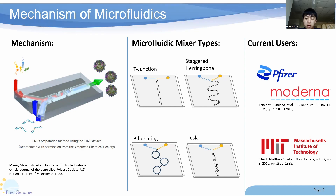To highlight the key parameters for microfluidic mixing: total flow rate, flow rate ratio, and pump type all have a significant effect on the end product of LNP synthesis. Total flow rate determines the overall speed and efficiency of the mixing process. Flow rate ratio affects the degree of mixing and the final composition of the mixture. And pump type — there are various pump types such as syringe pumps or pneumatic pumps — each drives fluid flow throughout the microfluidic device and offers distinct advantages and limitations.